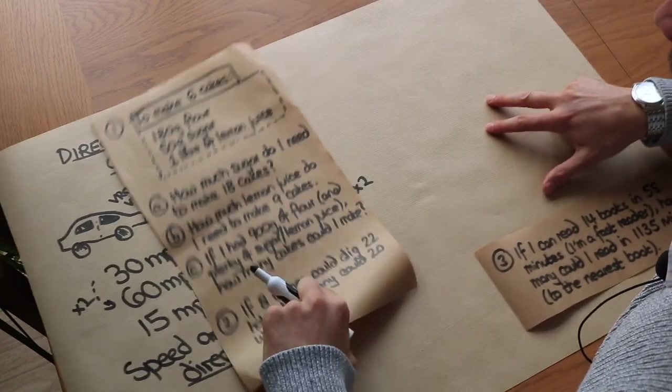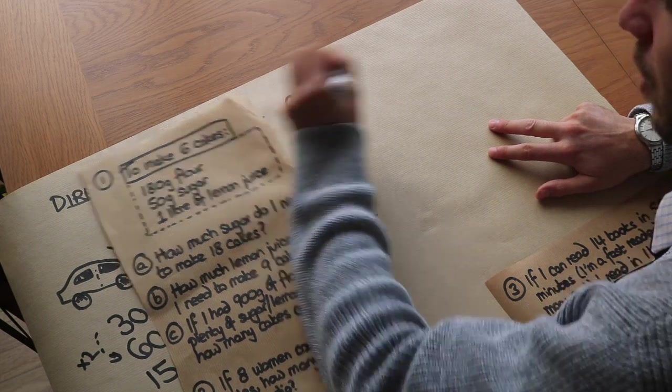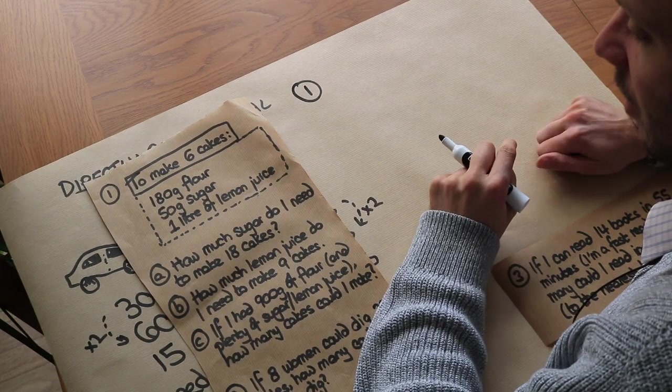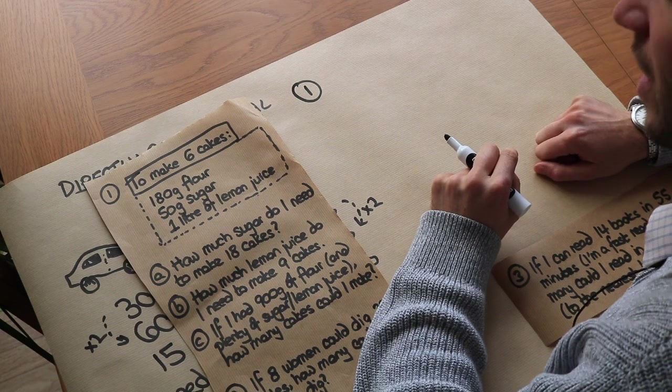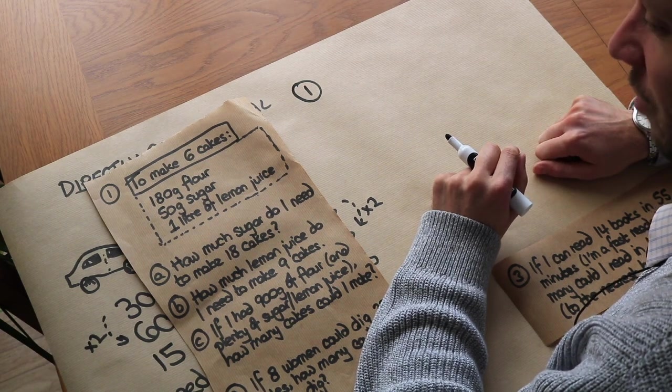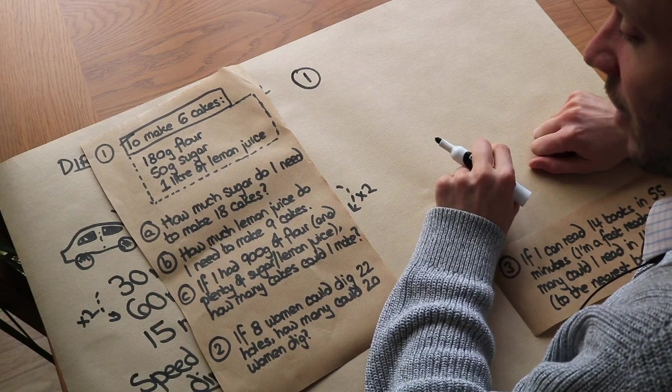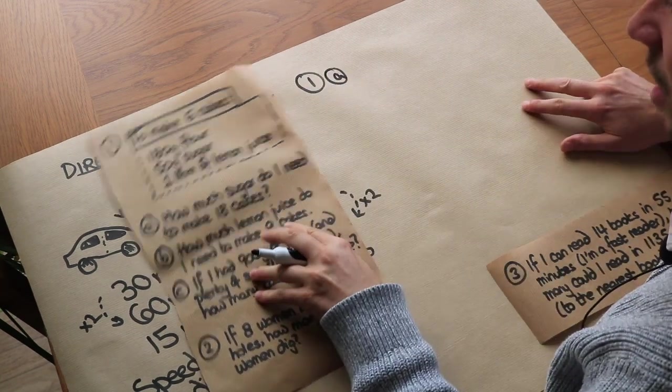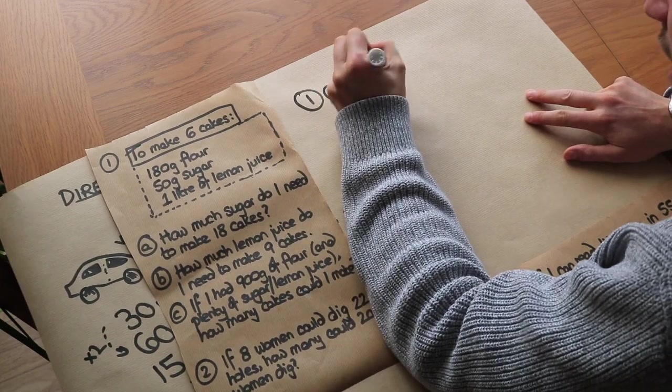So let's use that principle to solve these questions. Let's say that we want to make six cakes and we require 180 grams of flour, 50 grams of sugar, and one liter of lemon juice - I'm not sure about this recipe. So part a: how much sugar do I need to make 18 cakes? Well, let's think: to make 6 cakes...